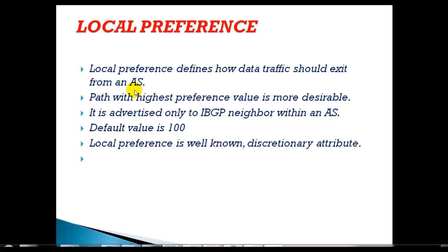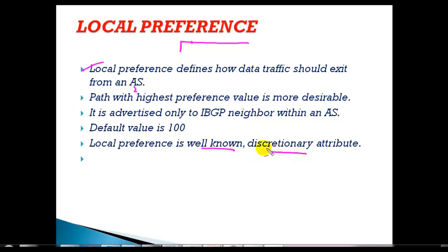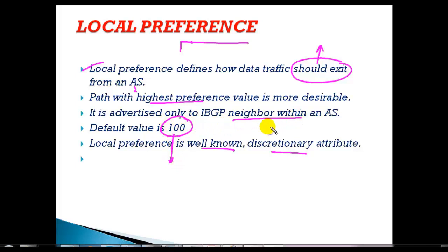In this video we'll see how to implement and verify local preference values. Local preference is a BGP attribute which is well-known and discretionary, and it defines how you should exit the autonomous system. By default, the highest value is preferred and the default local preference value is 100. It is advertised to all internal BGP neighbors.